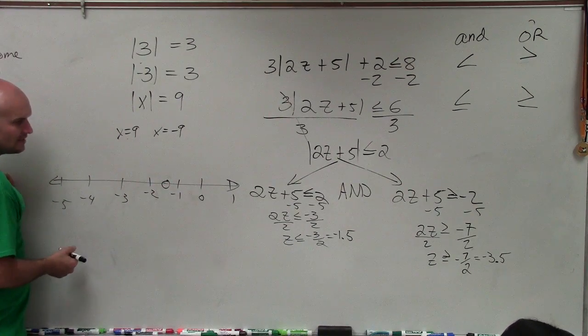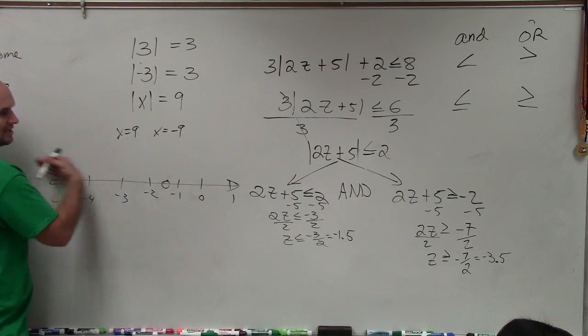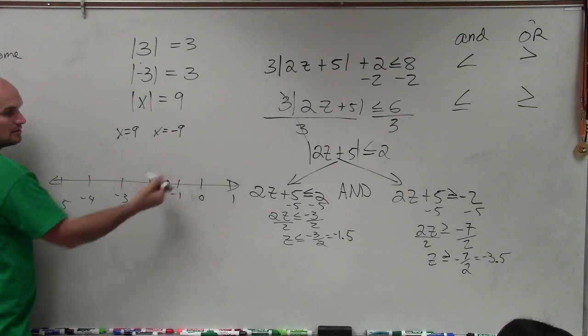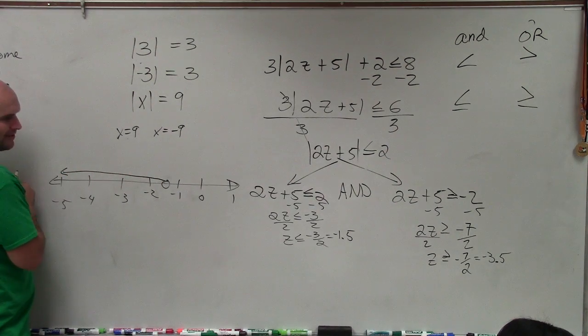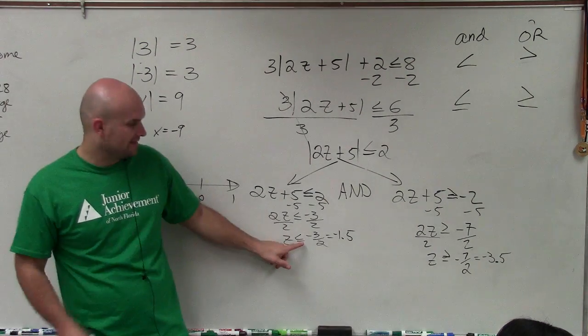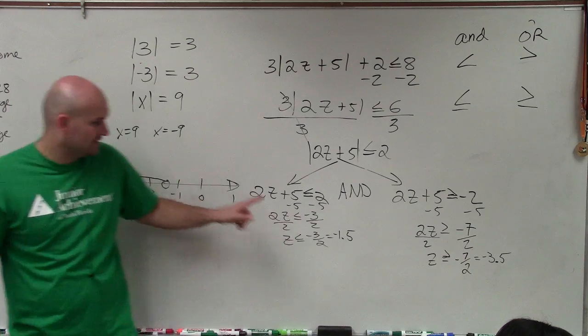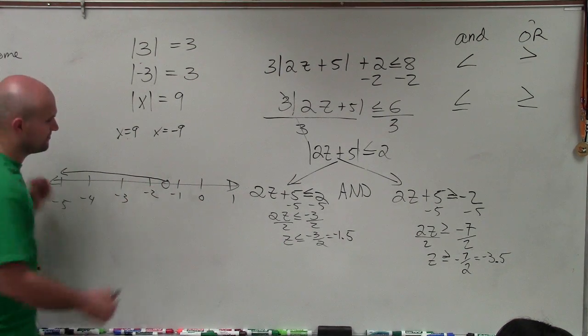Now, all the values that are less than negative 1.5, is that going to be going to the left or to the right? To the left. Everybody agree with me? That's what that would look like? Oh, and then going back to Brianna's comment, this is less than or equal to. So is that going to be shaded in or open? It's going to be closed, right? Yeah.